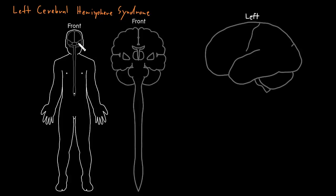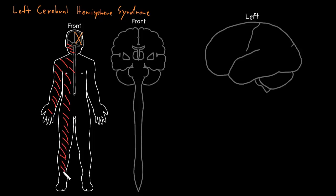So when we're looking at this person from the front, this left cerebral hemisphere — the left side of the cerebrum — has some sort of abnormality and it's not functioning properly. One of the abnormalities we may see involves dysfunction of upper motor neurons to the right side of the body. That's weakness and/or the other upper motor neuron signs: spasticity, hyperreflexia, clonus, and the extensor plantar response. The upper motor neurons start in the left cerebral hemisphere for the right side of the body primarily.